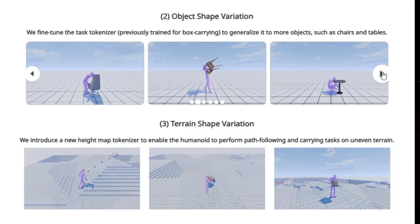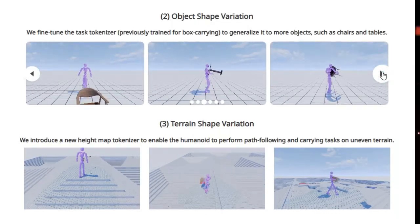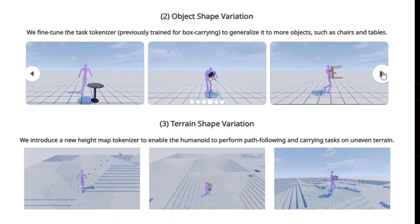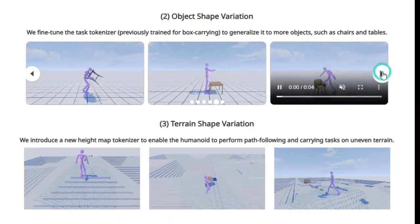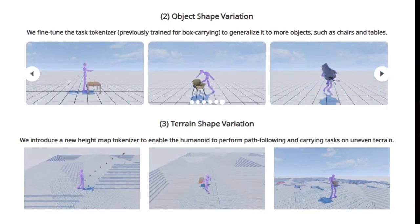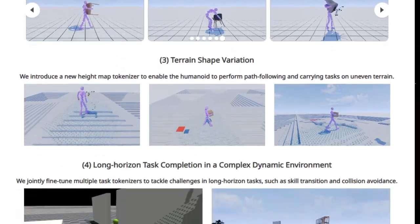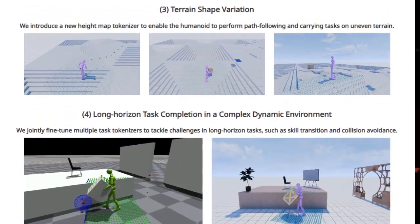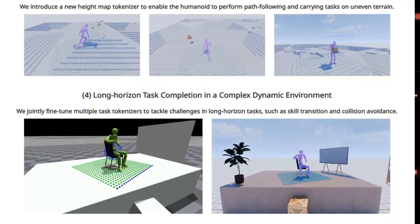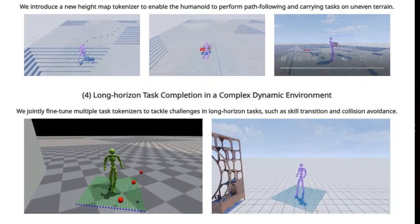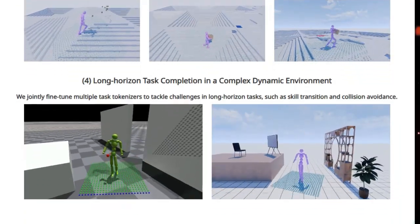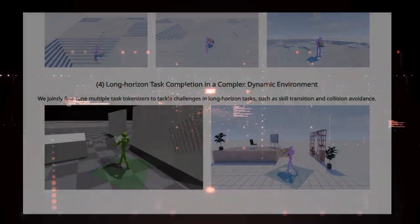For example, it can handle sitting down while carrying an object, or adapt to variations in object shapes — learning to carry not just boxes but also chairs and tables. Furthermore, Token HSI can handle uneven terrain for tasks like path-following and carrying, thanks to the introduction of a height-map tokenizer. The researchers even show its ability to tackle long-horizon tasks in complex, dynamic environments, demonstrating its potential for managing skill transitions and avoiding collisions.